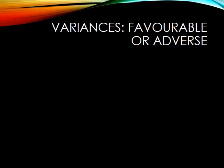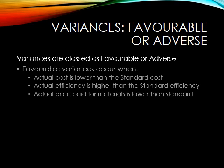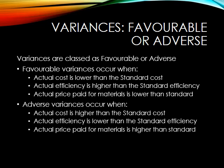When we look at variances they come in two types: either favourable or adverse. Favourable variances occur when our actual cost is lower than the standard cost. This can be because the efficiency with which we use our materials is higher than the standard efficiency, or the price that we're paying for our materials is lower than the standard price.